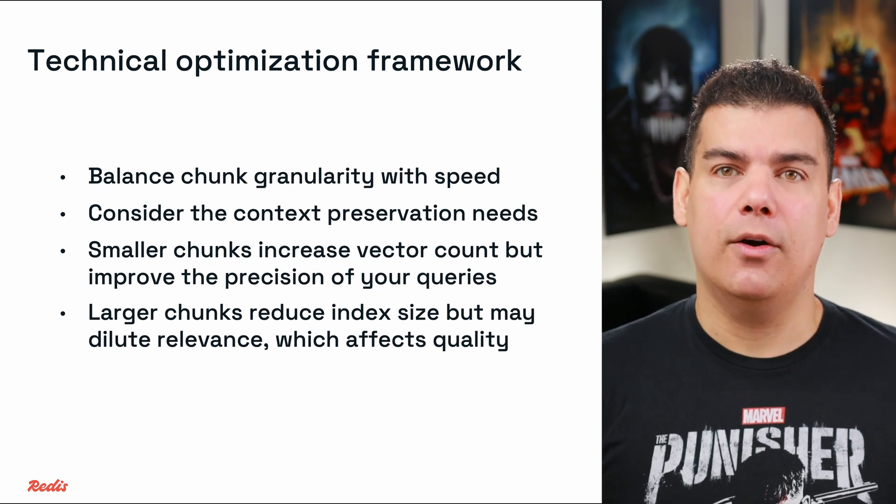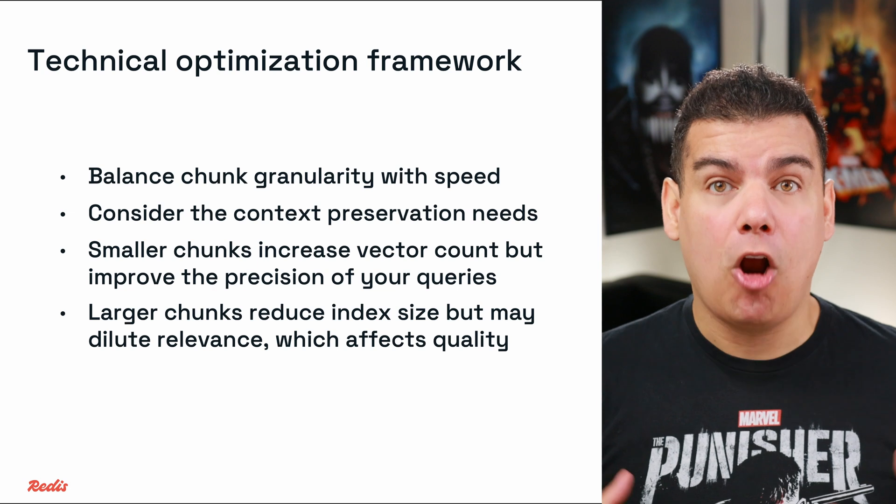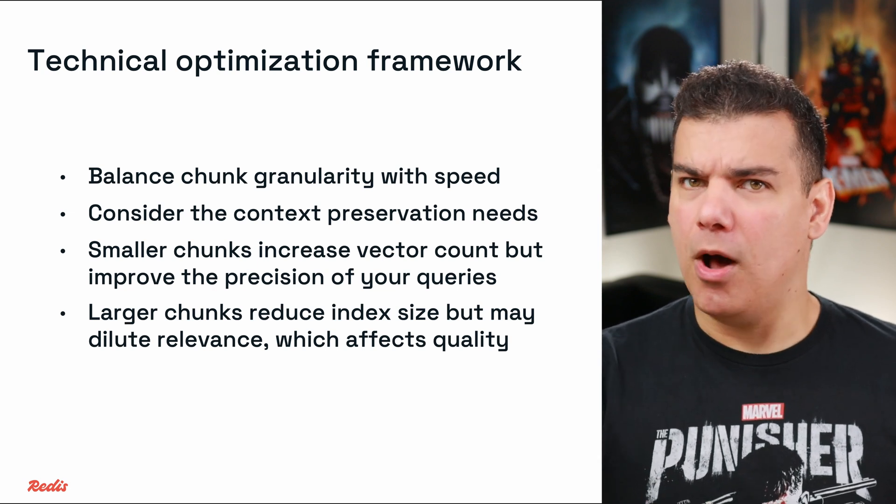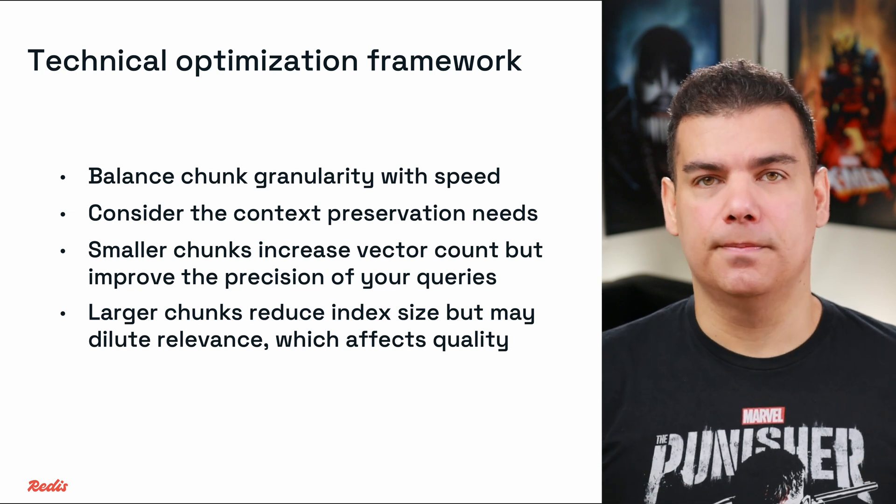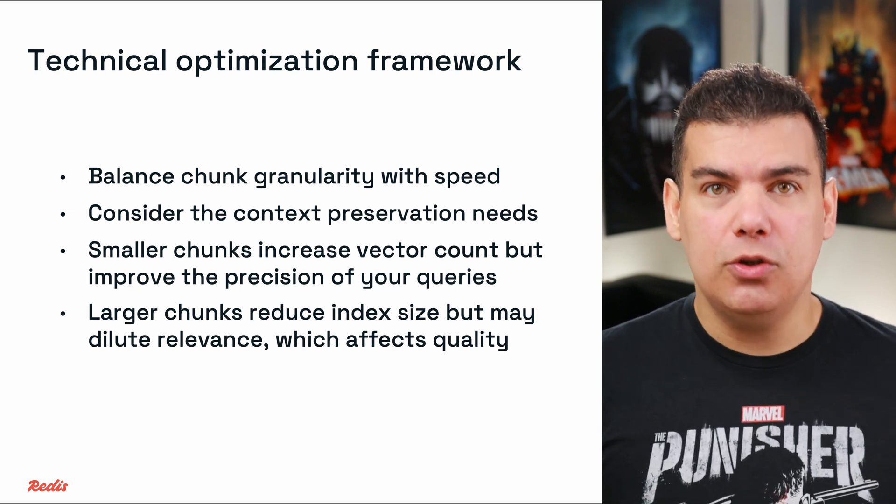For a detailed breakdown of specific chunking strategies, check out this other video that talks about this topic exclusively — the link is in the description. The technical optimization framework for chunking is critical: you need to balance chunk granularity against search latency requirements and context preservation needs. Smaller chunks increase vector count but improve precision, whereas larger chunks reduce index size but may dilute relevancy.